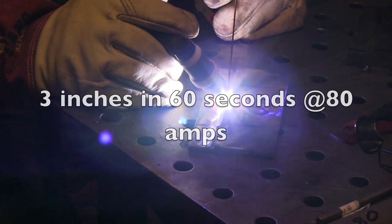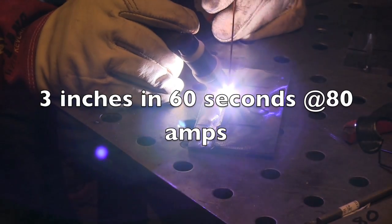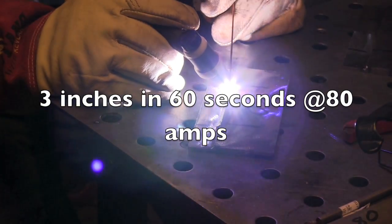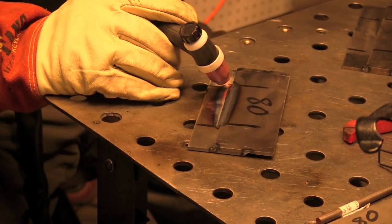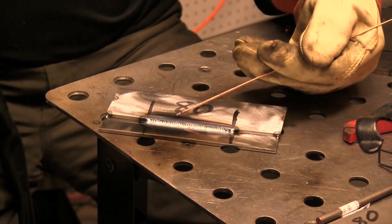This 80 amps will weld this 11 gauge steel which is roughly 120 to 125 thousandths thick, or 3mm thick, but you can see how slow it goes. It's a very slow process, a little too slow for my taste. If you just had to weld something and you only had a little 90 amp inverter, you could do it, but it took a whole minute to go 3 inches here, and that's just too long.